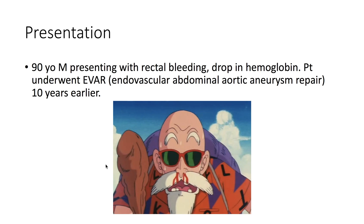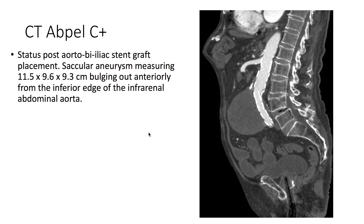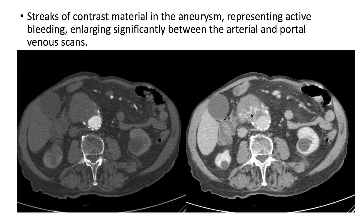This patient underwent endovascular abdominal aortic aneurysm repair 10 years earlier. On CT of the abdomen and pelvis with contrast, we can see the aortobiiliac stent graft. There is also a saccular aneurysm bulging out anteriorly from the inferior edge of the infrarenal abdominal aorta, with streaks of contrast material representing active bleeding. These streaks enlarge significantly between the arterial and portal venous scans.